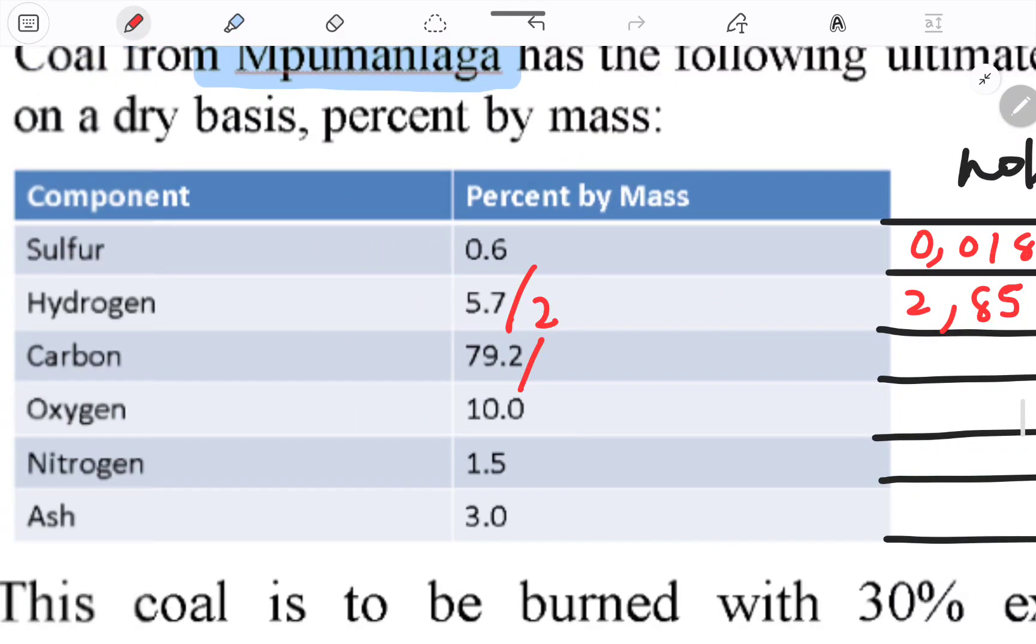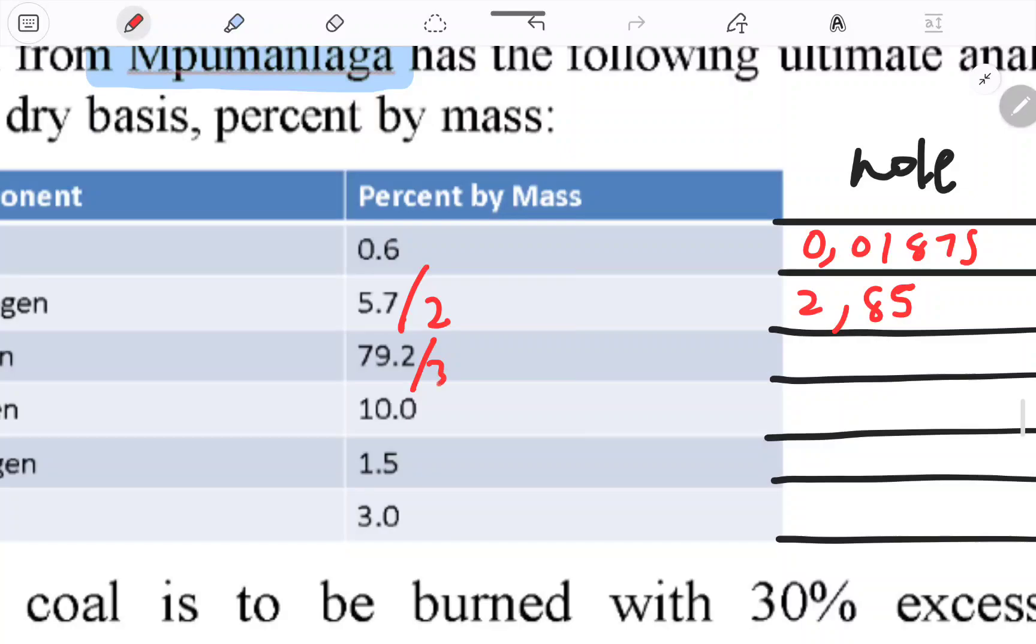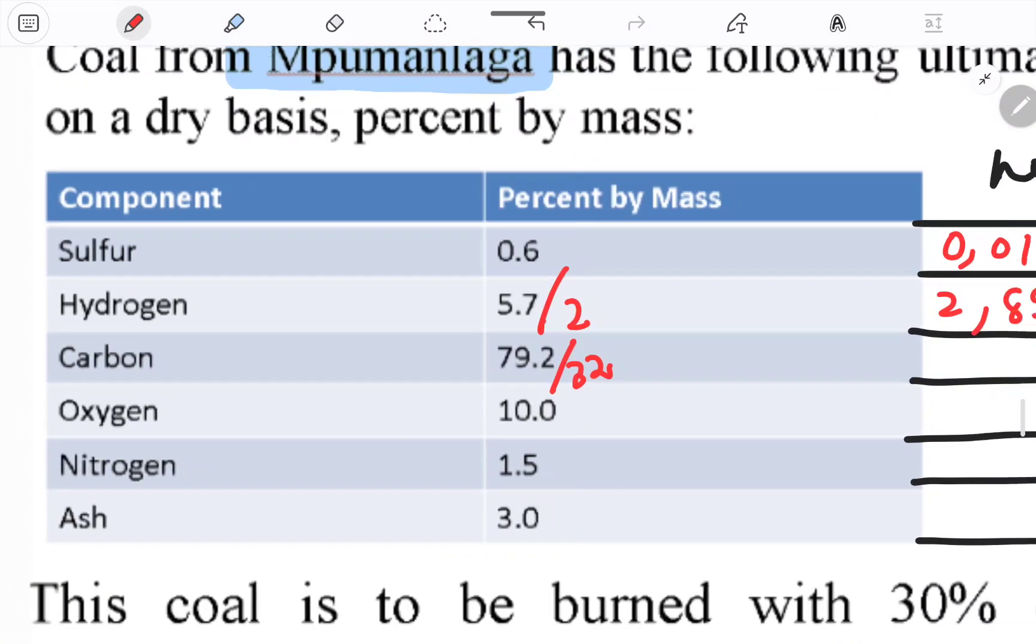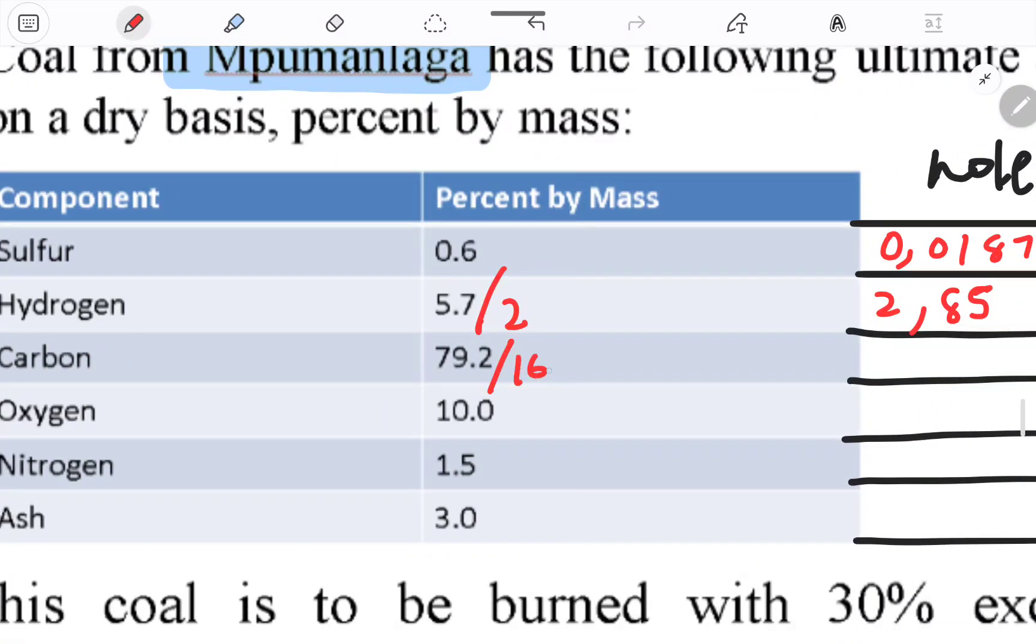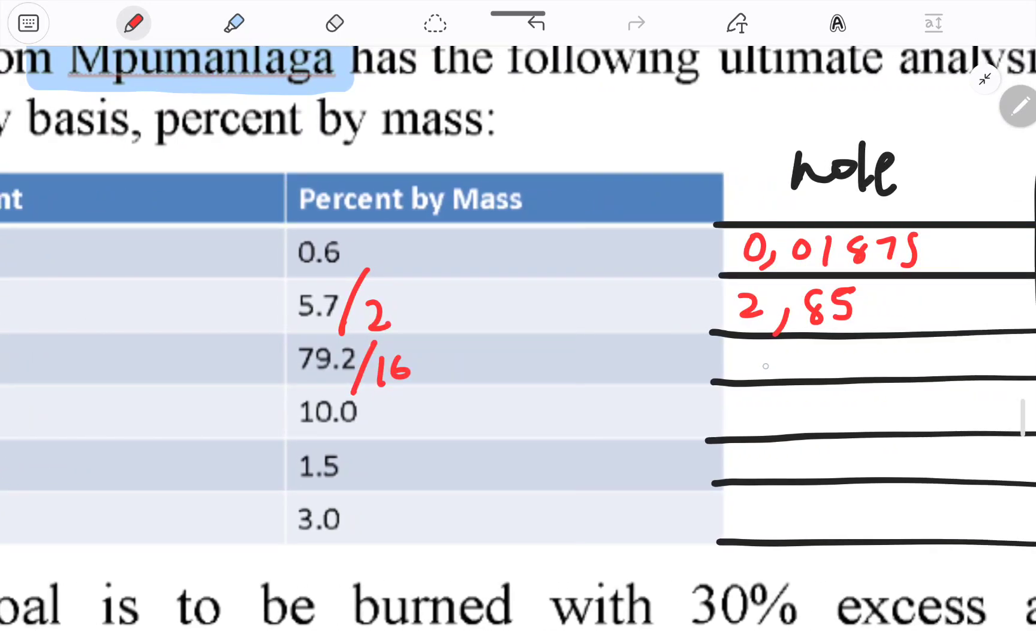For carbon, the molar mass is 12, not 16. So if I do 79.2 divided by 12, I'm getting 6.6. Let me confirm: 79 divided by 12 equals 6.6.